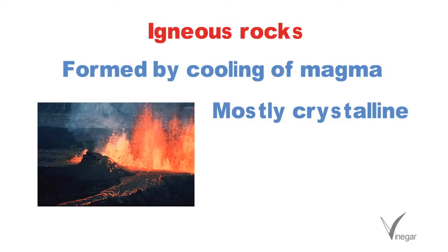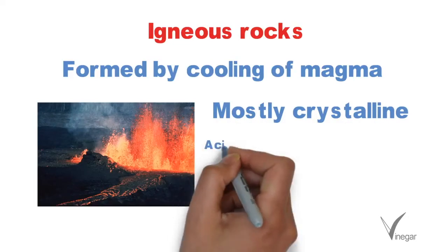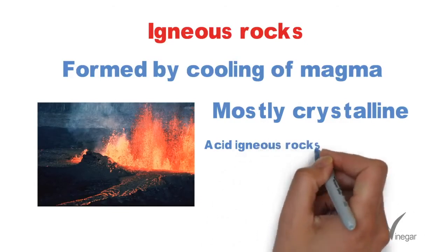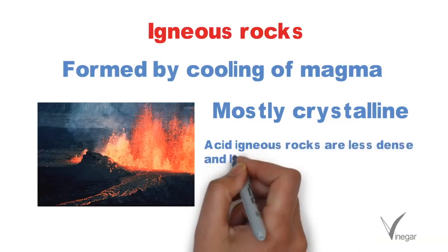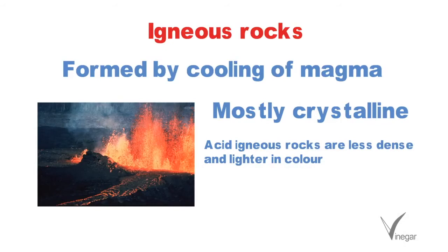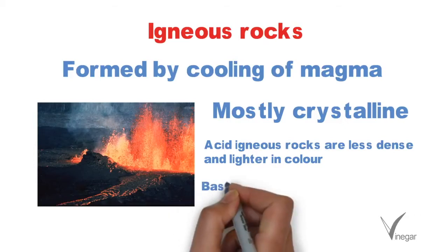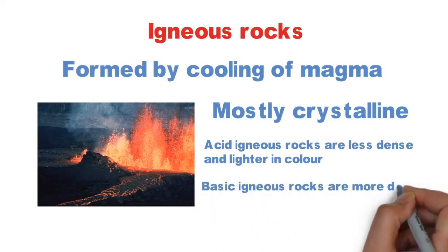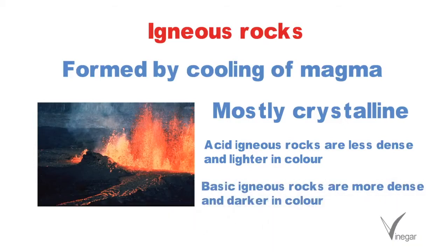Igneous rocks can be further classified depending upon their mineral composition. If they are high in silica, they are known as acidic igneous rocks — granite being an example. They are less dense and lighter in color compared to basic igneous rocks, which are rich in basic oxides like aluminium, magnesium, and iron.